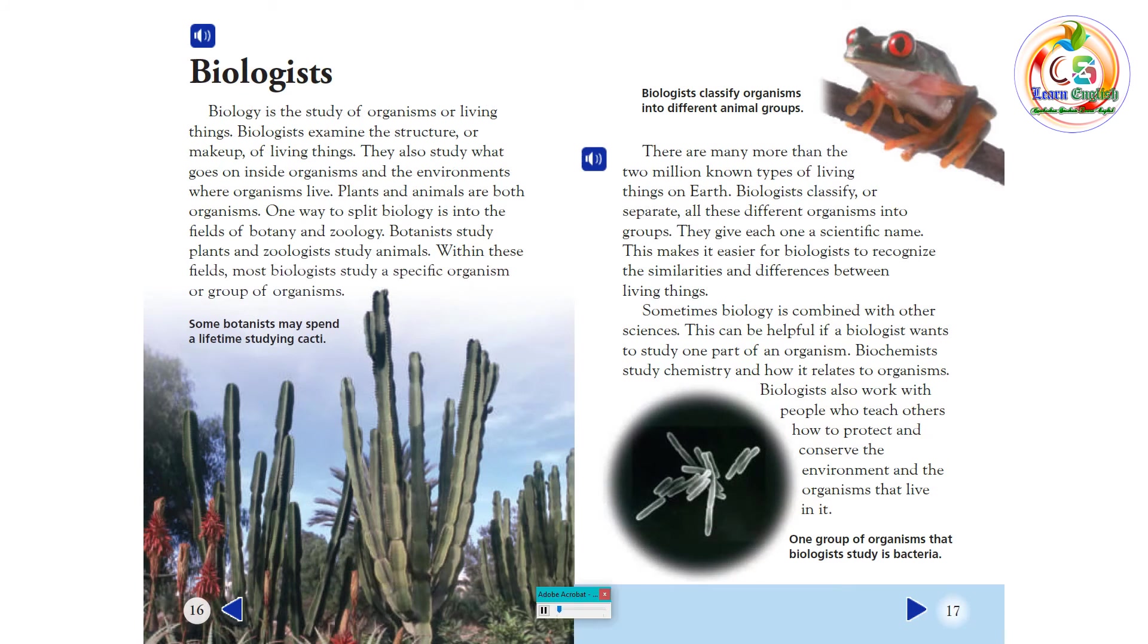Biologists. Biology is the study of organisms or living things. Biologists examine the structure or makeup of living things. They also study what goes on inside organisms, and the environments where organisms live. Plants and animals are both organisms. One way to split biology is into the fields of botany and zoology. Botanists study plants, and zoologists study animals. Within these fields, most biologists study a specific organism or group of organisms.